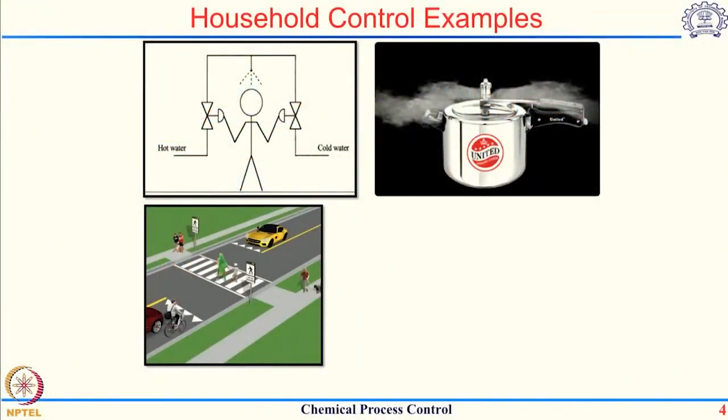The next example is crossing the road. When we want to cross the road, our objective is to go from one end to the other without being hit by any vehicle. We have control over how fast we walk and when we cross. The disturbances are the cars and other vehicles coming from both sides. We have to predict whether we are able to cross the road safely by estimating how fast the car is coming and how much time it would take to reach us.